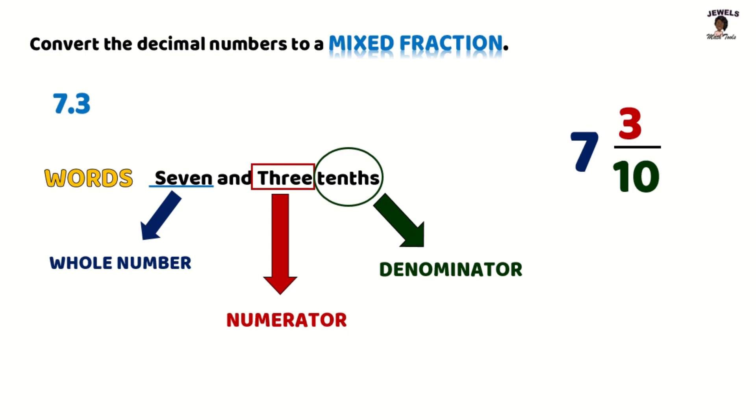So remember that your 7 represents your whole number. Your 3 will be your numerator and the tenths is the denominator.